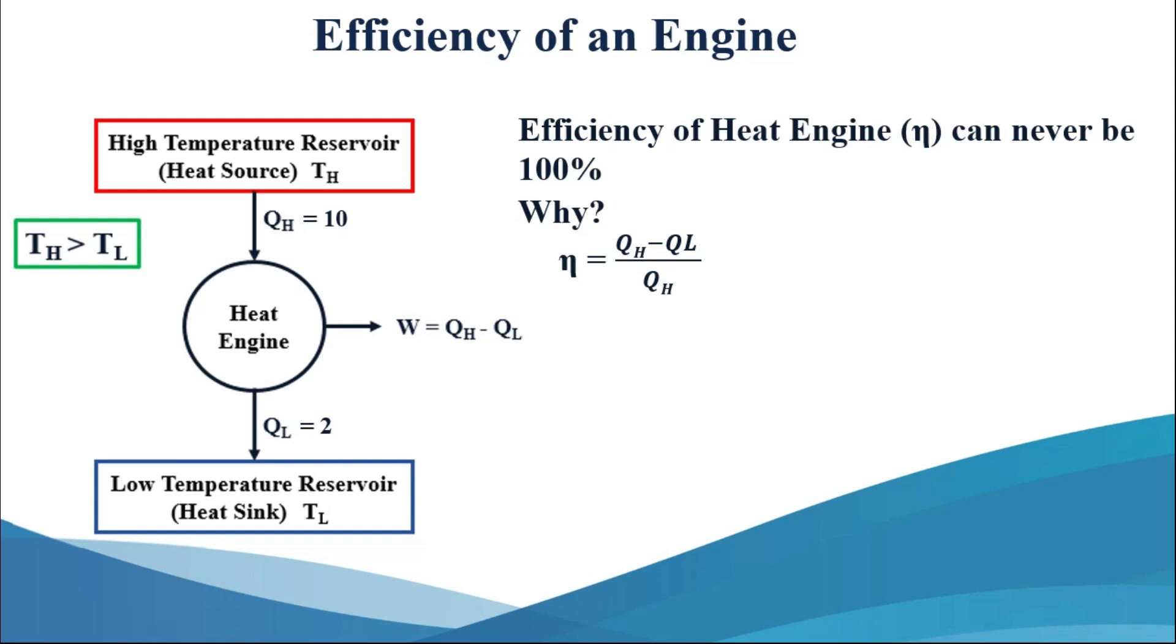As per the definition, eta equals to QH minus QL divided by QH. So eta becomes 10 minus 2 divided by 10. So eta equals to 8 divided by 10, which gives us eta equals to 0.8.